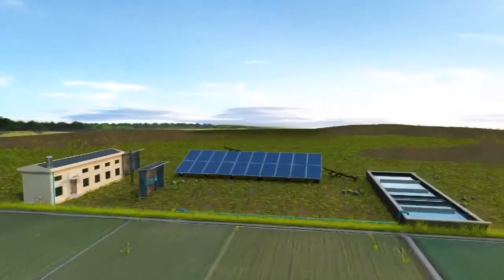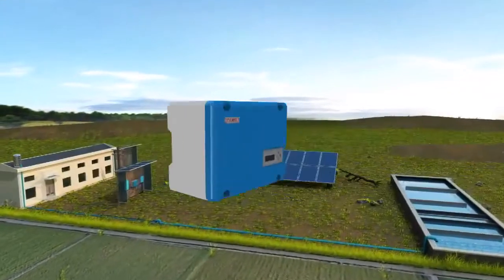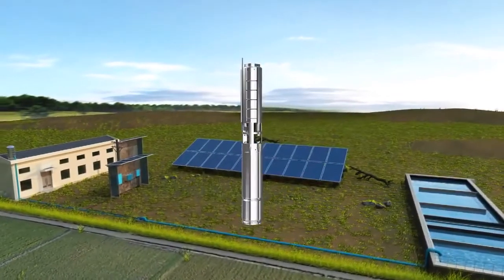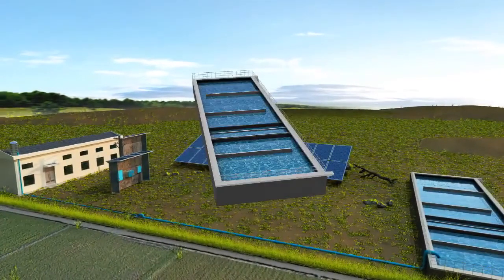JNTech solar pump system consists of solar panels, solar pump inverter, AC pump, and water storage device.